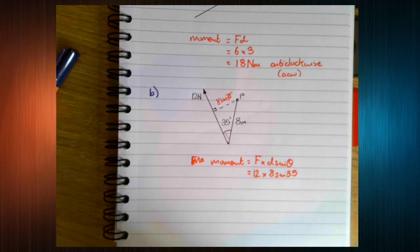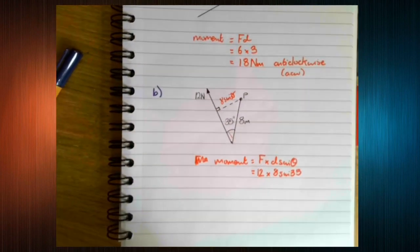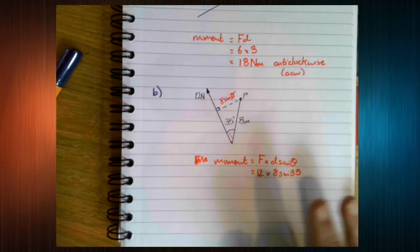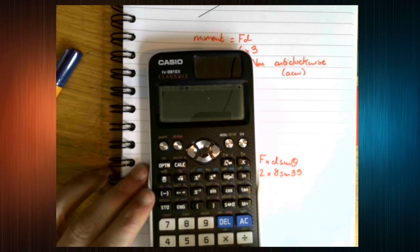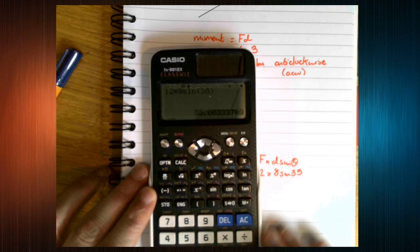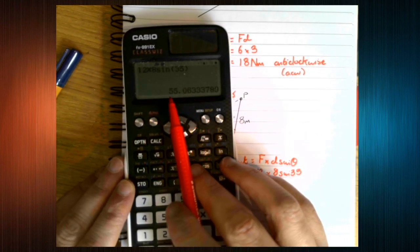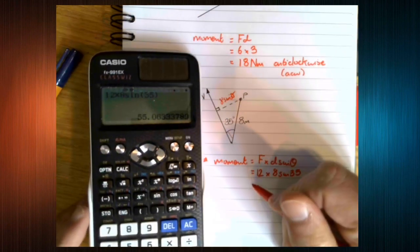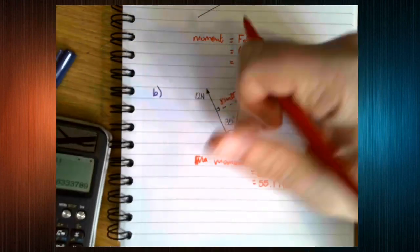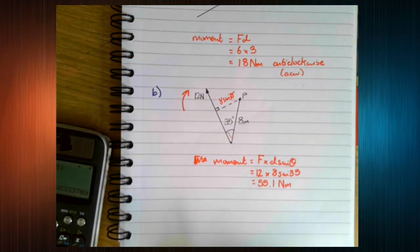So our force is 12 newtons. The distance is 8 sine 35. Which we stick in our calculators. Making sure that we have moved from radians mode to degrees mode. Typically, mechanics, we work in degrees. Not always, but very typically. So we're going to do 12 times 8 sine 35. And we get 55.06. So 55.1 newton meters. And this is going to make it turn this way. So we're going clockwise.